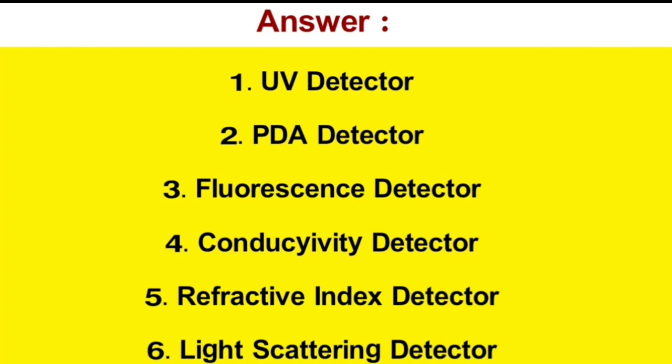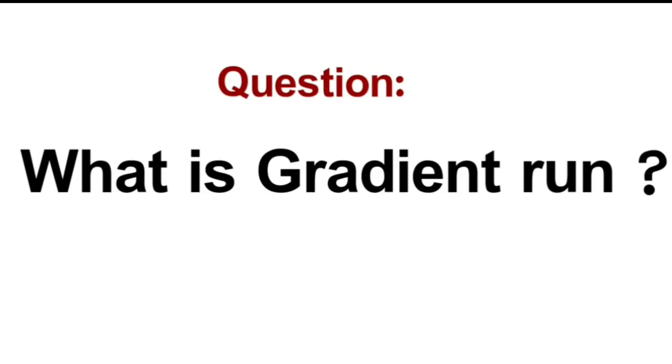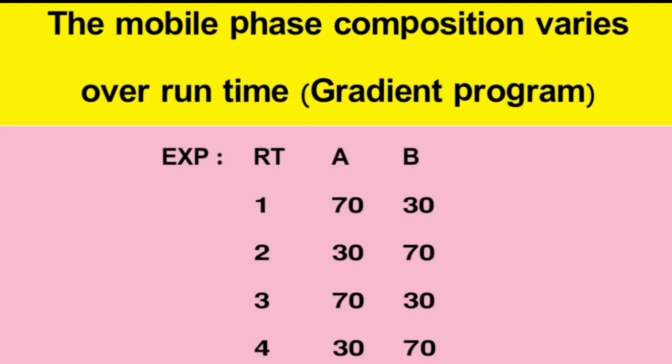Question: What is gradient run? Answer: The mobile phase composition varies over run time in a gradient program. Example: Retention time, channel A and B. At 1 minute, channel A 70%, channel B 30%. At 2 minutes, channel A 30%, channel B 70%.